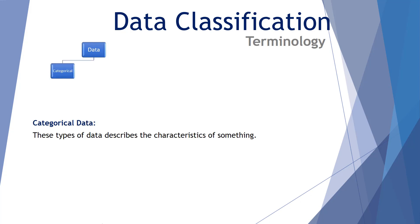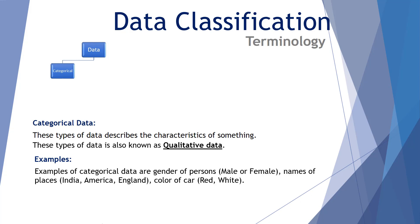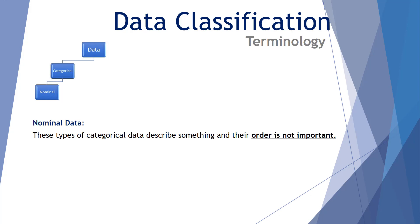So let's first of all look at some classifications of data. The first category of data is categorical data. These types of data describe the characteristics of something. They're also known as qualitative data. So an example of categorical data would be the gender of a person, maybe the names of places such as India, America, England, or the color of a car: red, white, etc.